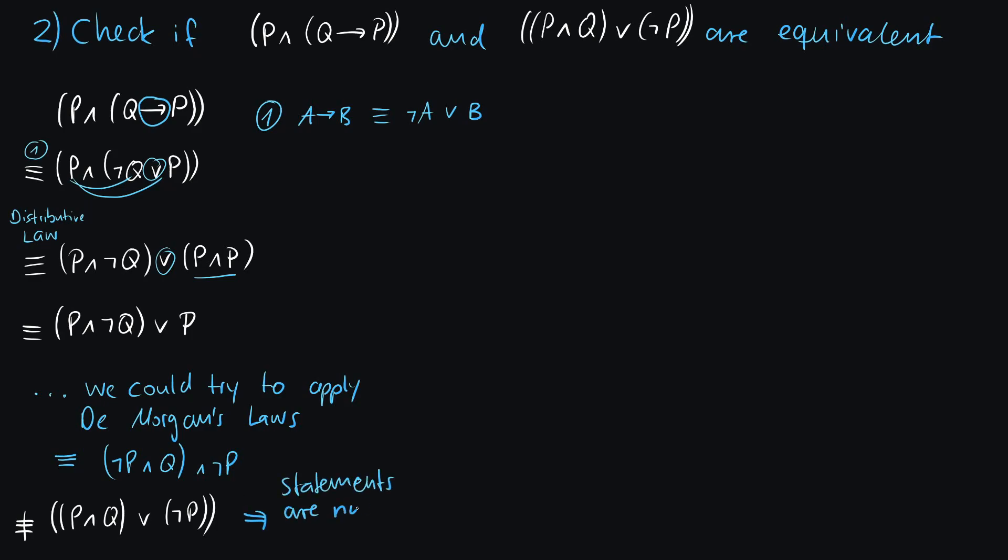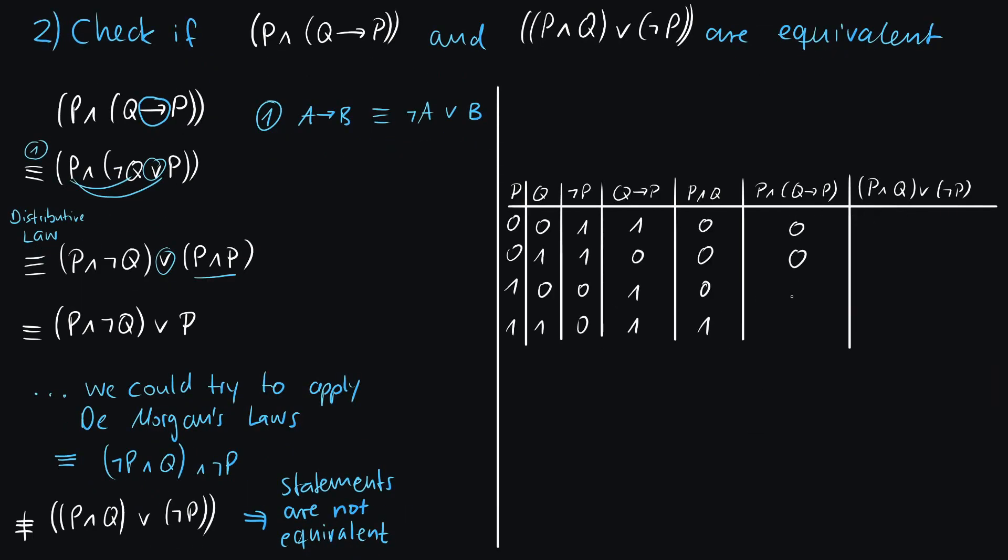So with that we have proven that those two statements aren't equivalent. Just for demonstration purposes I have added a truth table and by using the truth table we can see that those two columns aren't equivalent. This would be a second valid option to prove that those statements aren't equivalent.